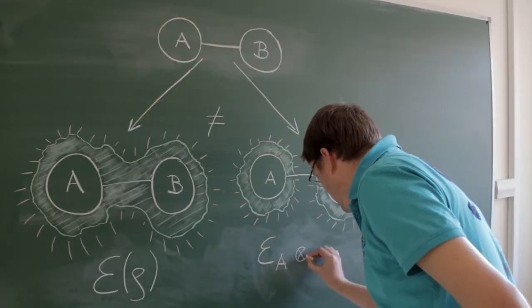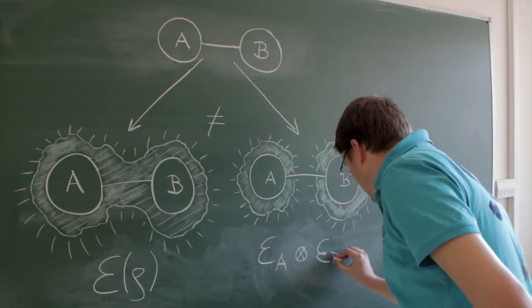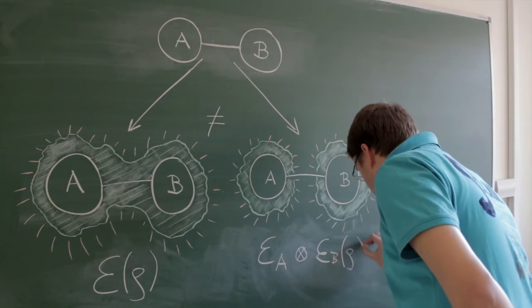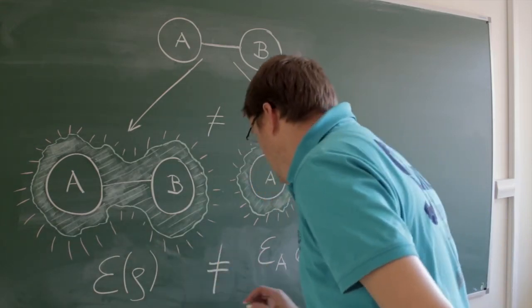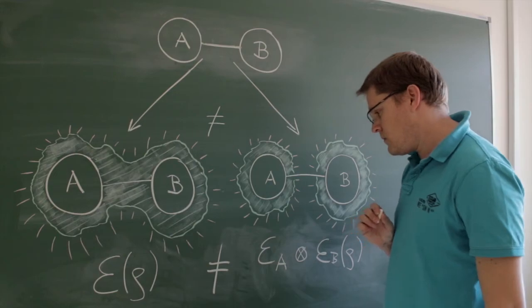On the other hand, in composite quantum systems, the dynamics can as well be correlated. That means that the time evolution of a subsystem may not be independent of the evolution of the other parts.